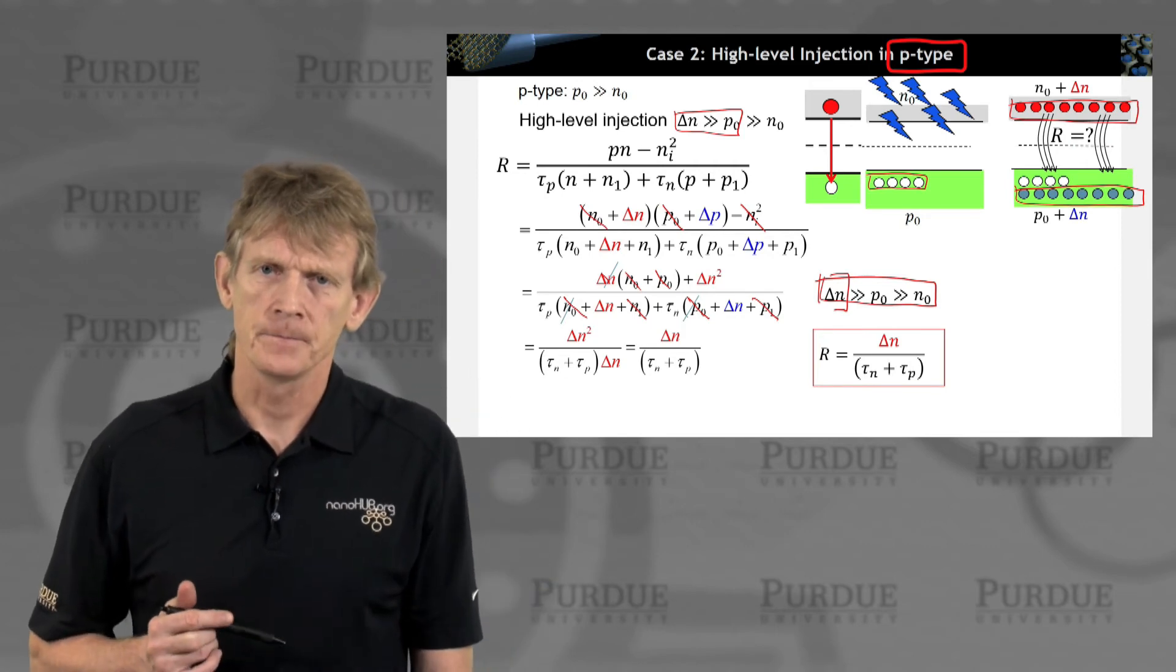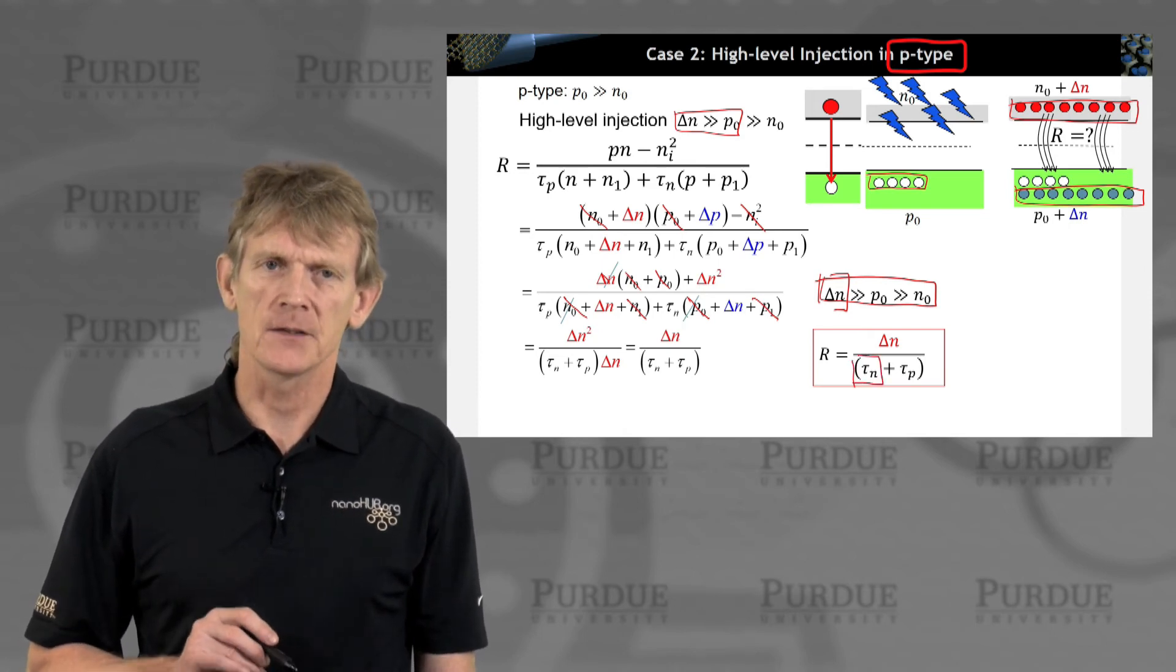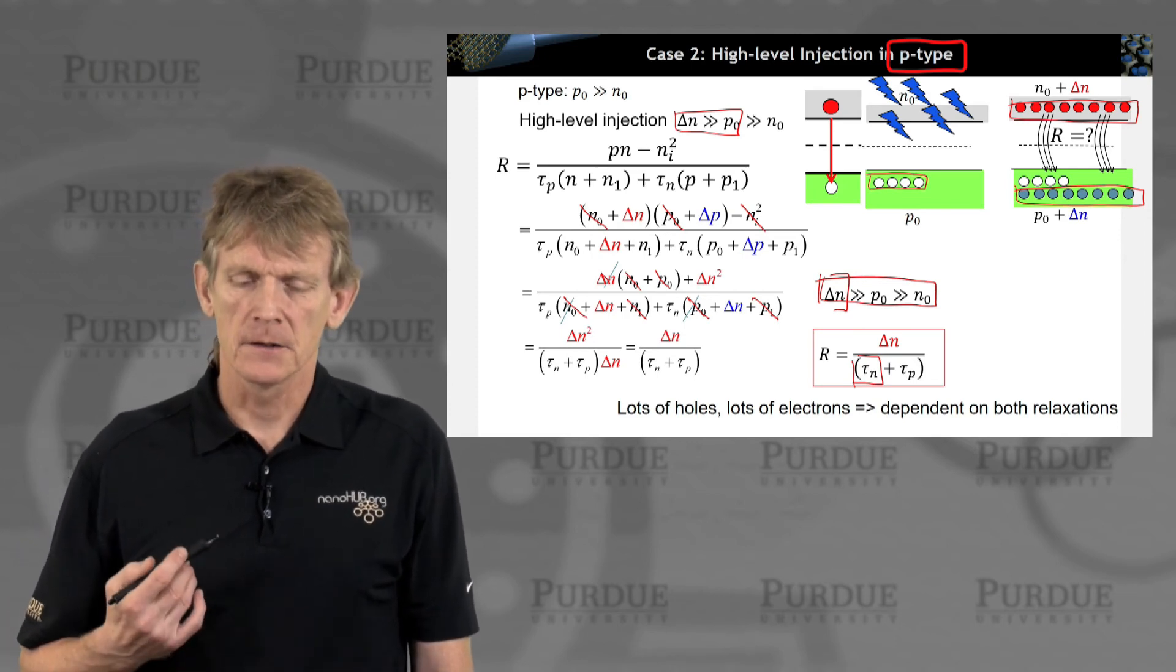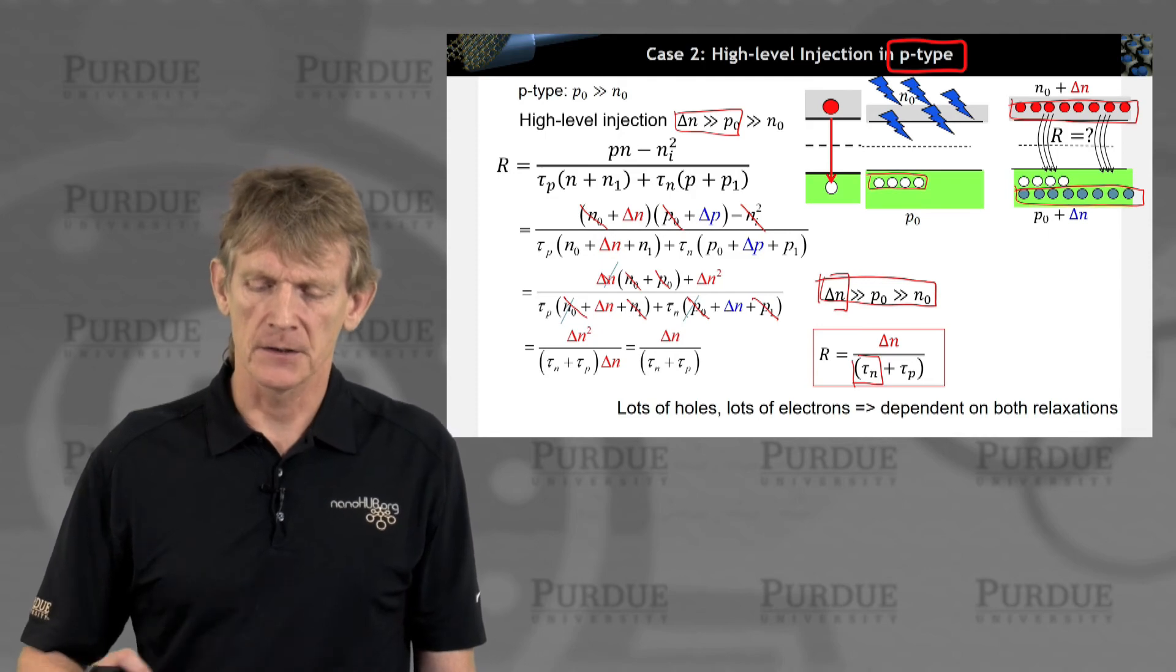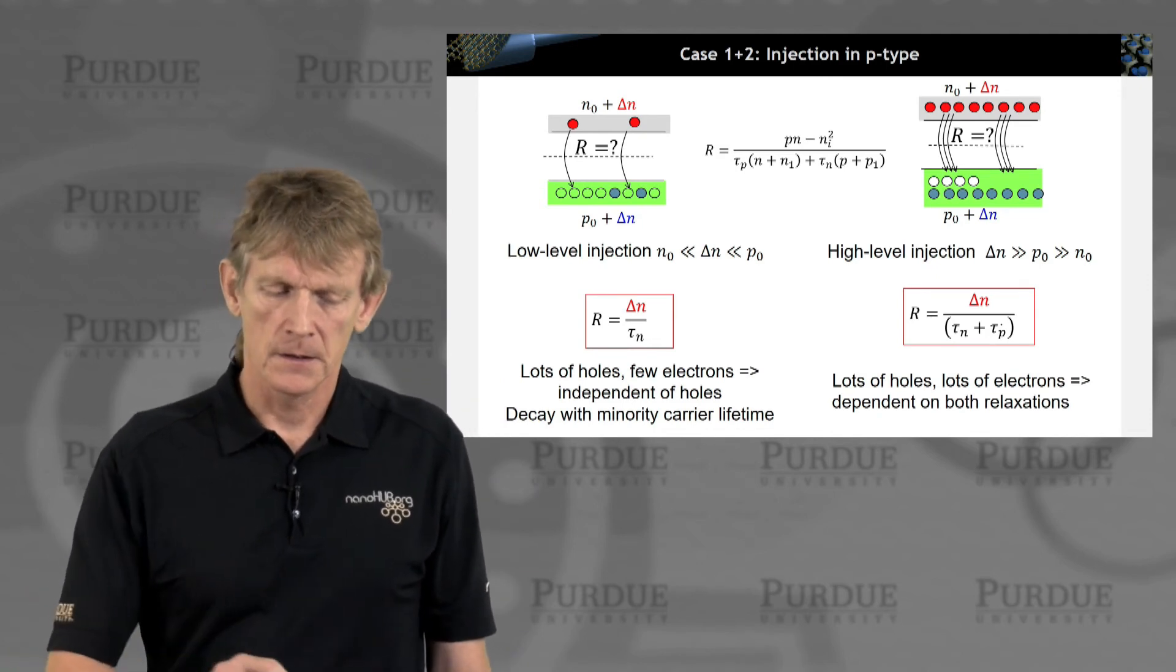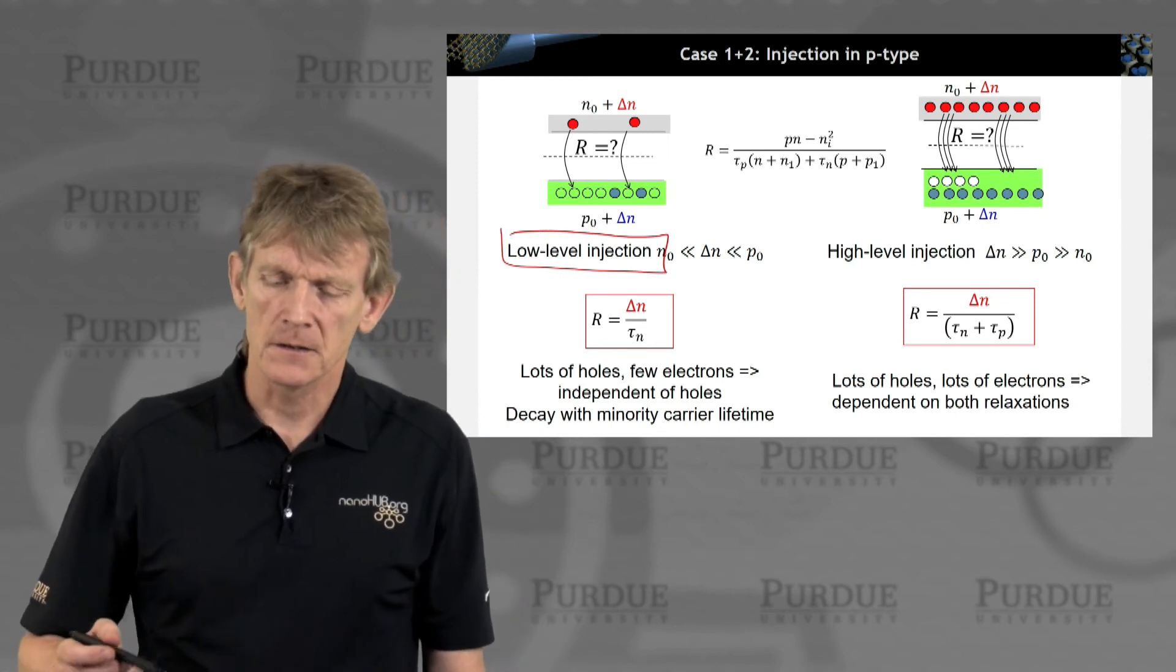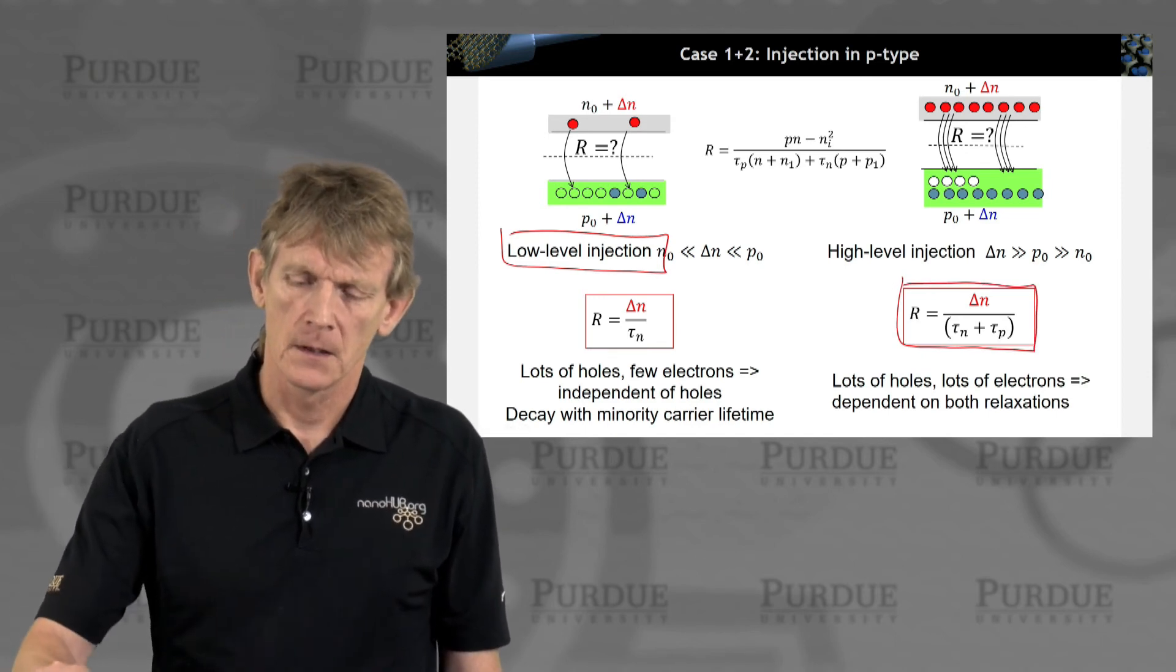We get delta N squared over the sum of the carrier lifetimes. So at high level injection, it's not just the electron time that is needed to drive the system back to equilibrium, but also the majority carrier lifetime. So basically, the system will react much stronger to a much stronger excitation, and it involves minority and majority carriers in this relaxation process. So compare those numbers. In the left here, you have lots of holes, few electrons, independent of holes, decay with minority carrier lifetime if you have low level injection. If you have high level injection, you need more processes to reduce the system back to equilibrium in a stronger way.